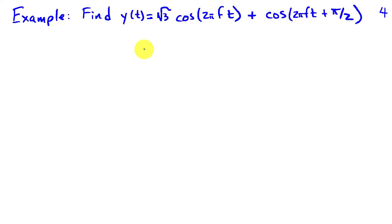Let's illustrate this with an example. Suppose we're going to add up two sinusoids of frequency f. The first one is cosine 2 pi ft times the square root of 3, so it has amplitude square root of 3 and phase 0. The second one is cosine 2 pi ft plus pi over 2, so this one has amplitude 1 and phase pi over 2.